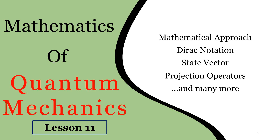Do you know what is the importance of Dirac notation in quantum mechanics? Do you know how, in the early days of the mathematical approach, Dirac created a revolution with his Dirac notation? Do you know what are state vectors and how it leads to an important foundation on the mathematics of quantum mechanics?